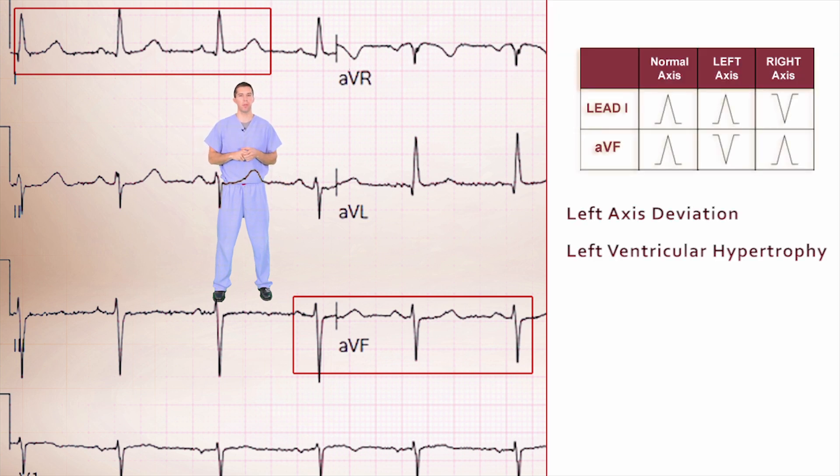Left axis deviation is commonly seen in conditions like left ventricular hypertrophy, which we can see in patients that have long standing hypertension. Let's take a look at another EKG.